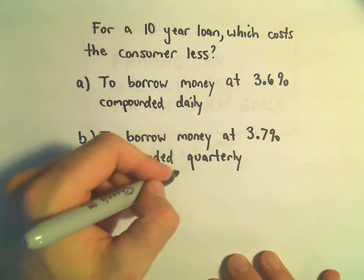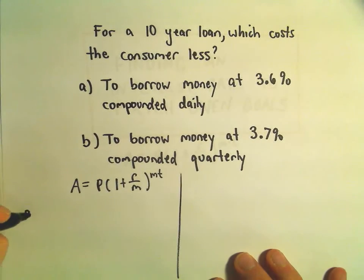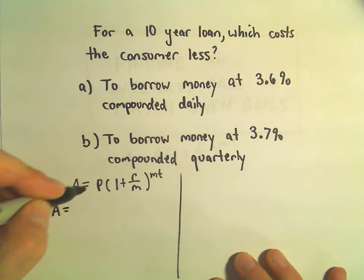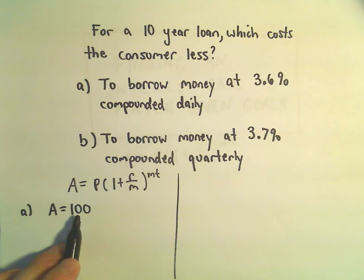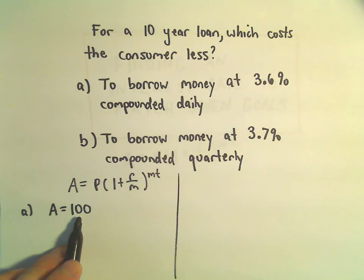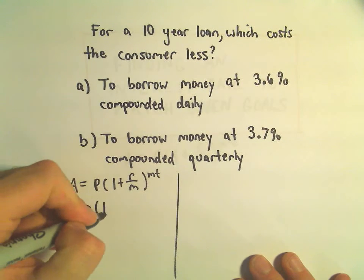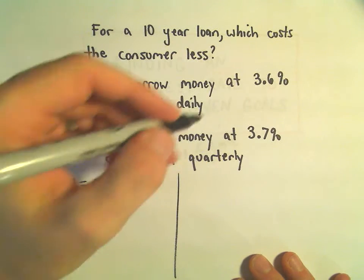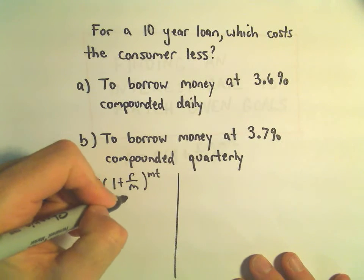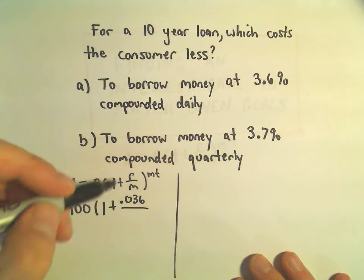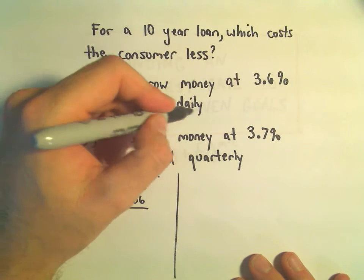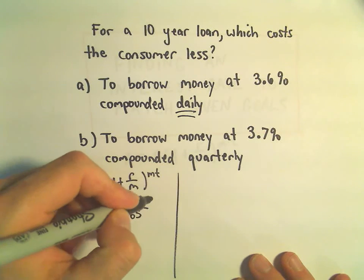So I'm going to use my formula here. So for Part A, let's just maybe assume we take out, suppose we take out a loan of $100. So in that case, that would be the starting principal. So the rate is 3.6%. As a decimal, we'll write that as .036. The number of compounding, since we're doing it daily, we'll divide by 365.